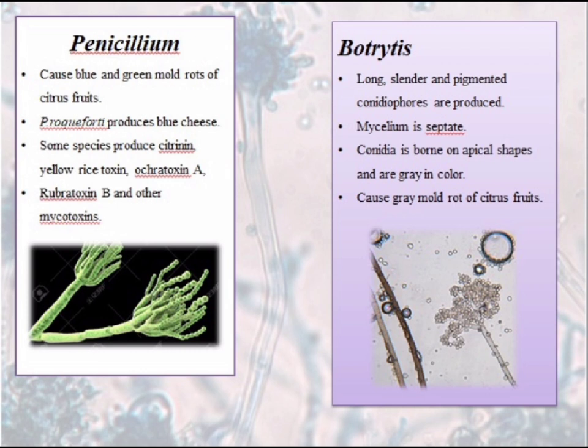Next is Botrytis. They have long slender pigmented conidiophores. Mycelium is septate. Conidia are borne on apical shapes and are grey in colour. They cause grey mold of citrus fruits.